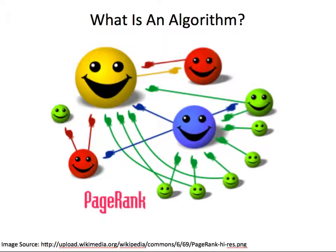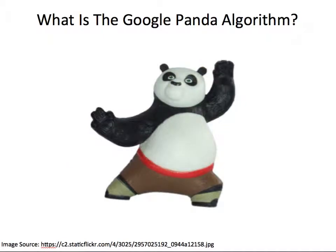Every day they're making tweaks to certain ingredients within the algorithm. Basically, an algorithm is just a bunch of different metrics that Google uses to determine high-quality websites from low-quality websites. So what exactly is the Google Panda algorithm? Panda is just a small sliver, just a small part of the overall Google algorithm, and what Panda is designed to do is find low-quality, spammy websites.